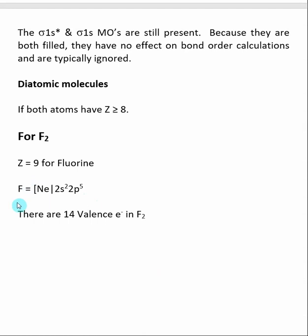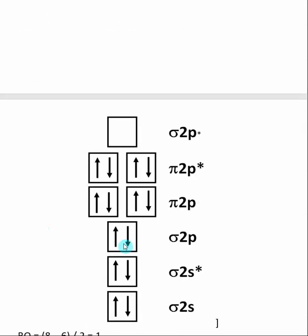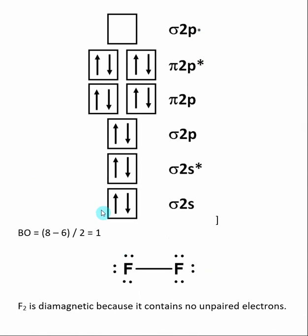Fluorine has 7 valence electrons — 2 electrons in the 2S subshell and 5 electrons in the 2P subshell. So F2 has 14 valence electrons total. We start adding electrons into the molecular orbital diagram, filling the lowest molecular orbital first, then the next. When we start putting electrons into the pi 2P molecular orbitals, because these are degenerate, we put one electron in the first, then one in the other, then a second in the first, and then a second in the other, following Hund's rule.